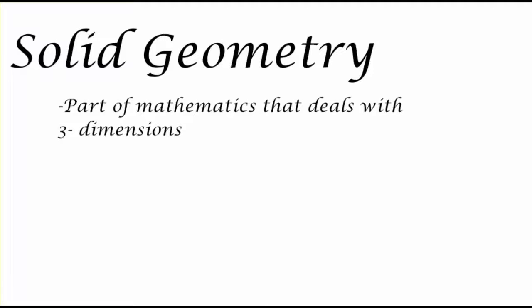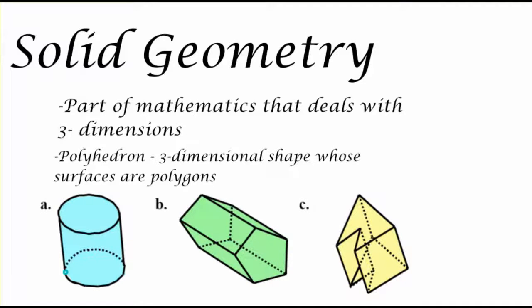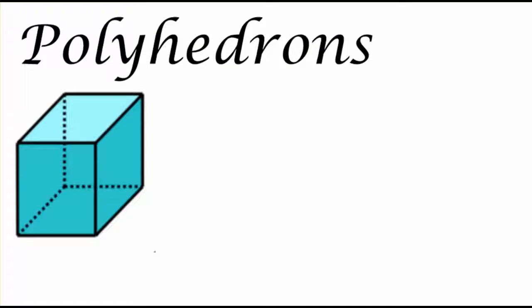Solid geometry is a part of mathematics that deals with three dimensions. Three-dimensional figures are called polyhedrons, which is essentially a three-dimensional shape whose surfaces are polygons. Looking at these three shapes, one of them being very recognizable, we would know that the second two are polyhedrons and the first is not, for reasons that we'll discuss in a bit.